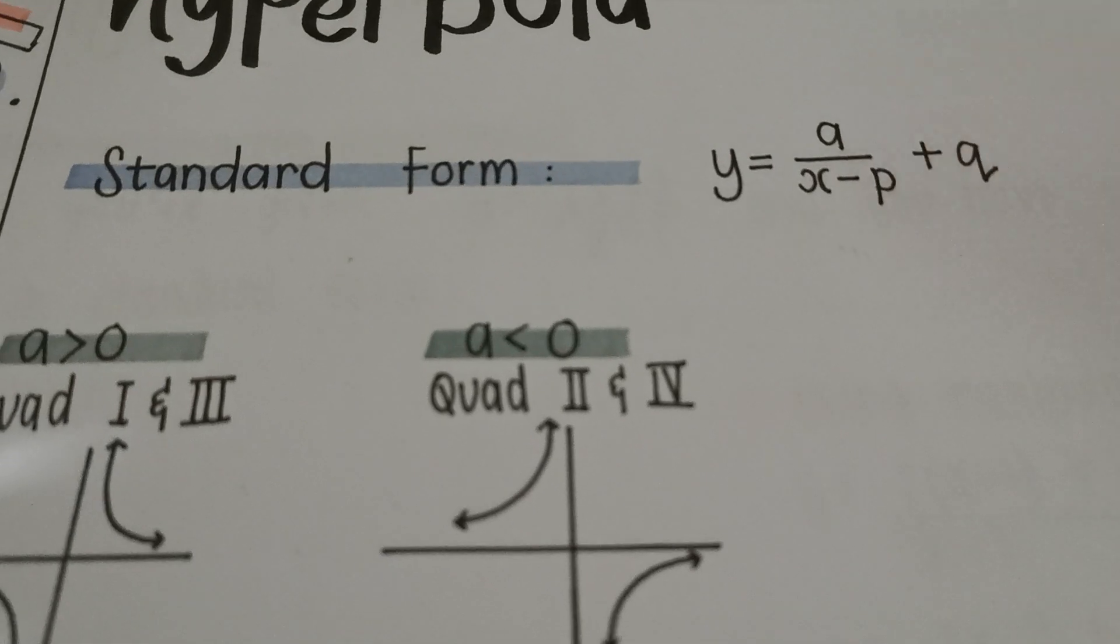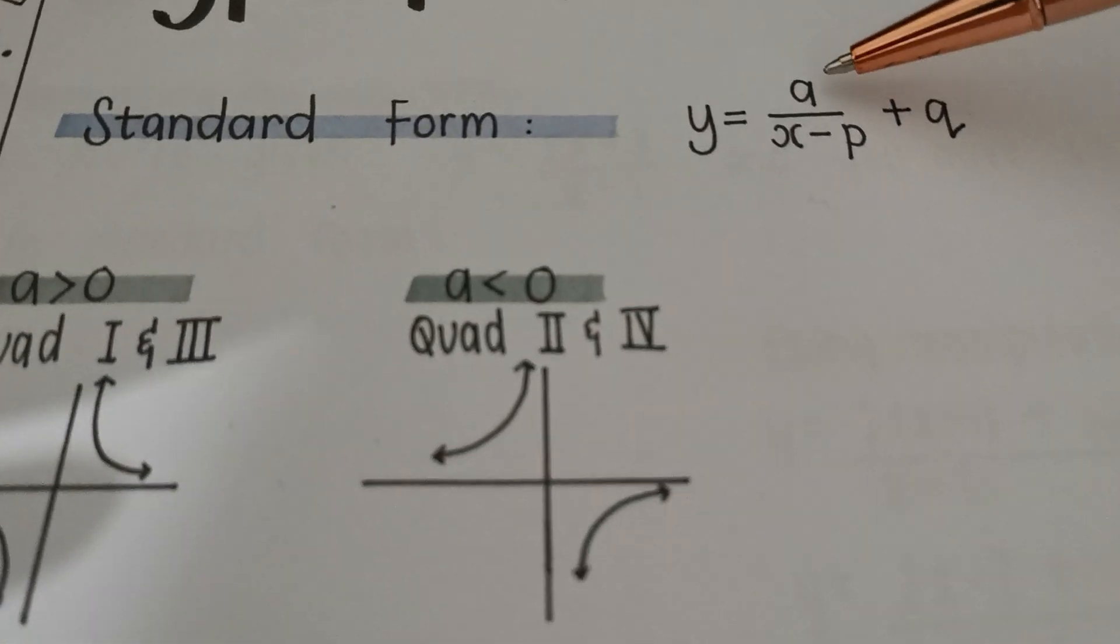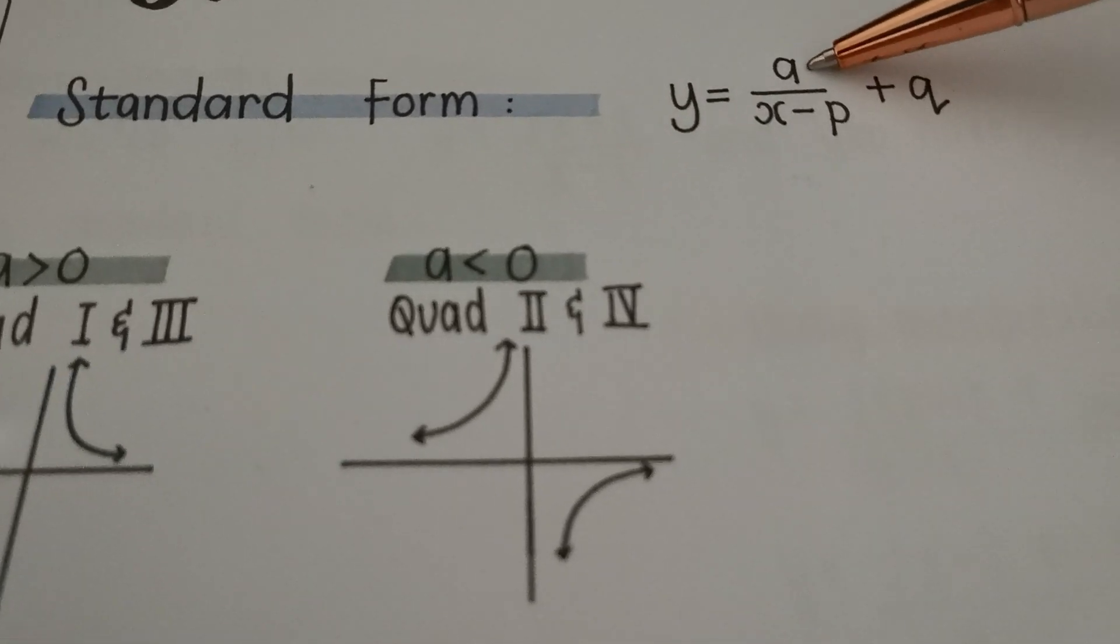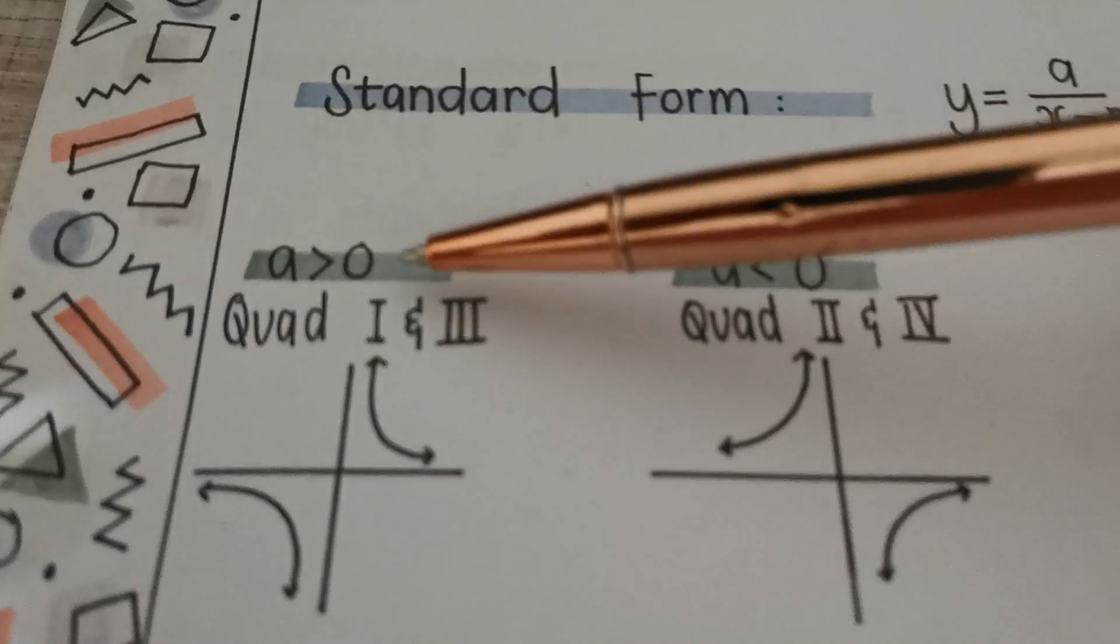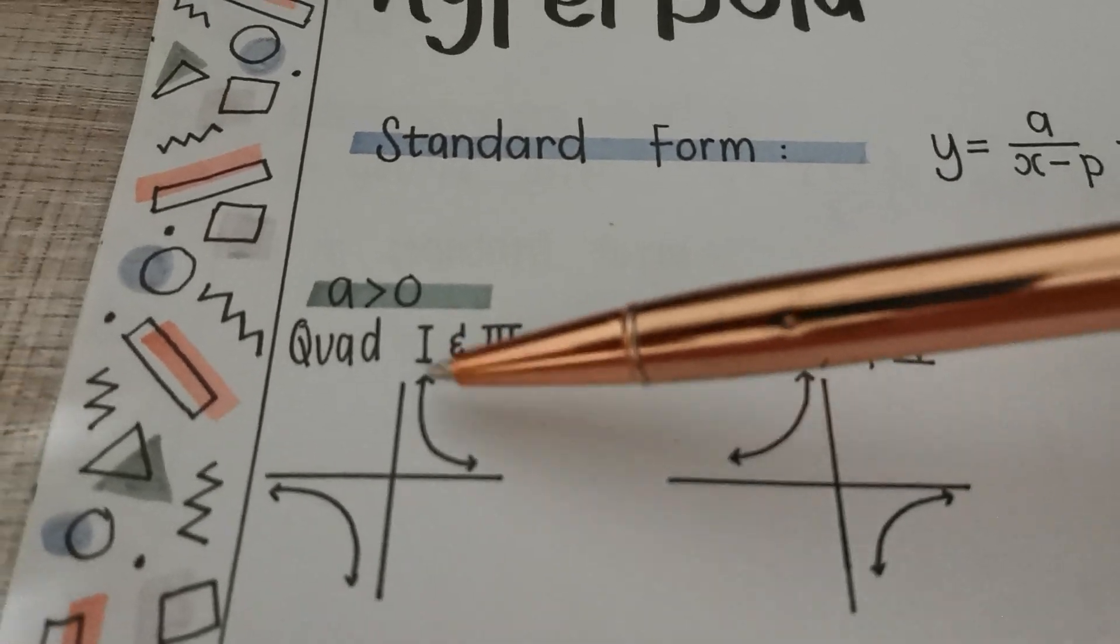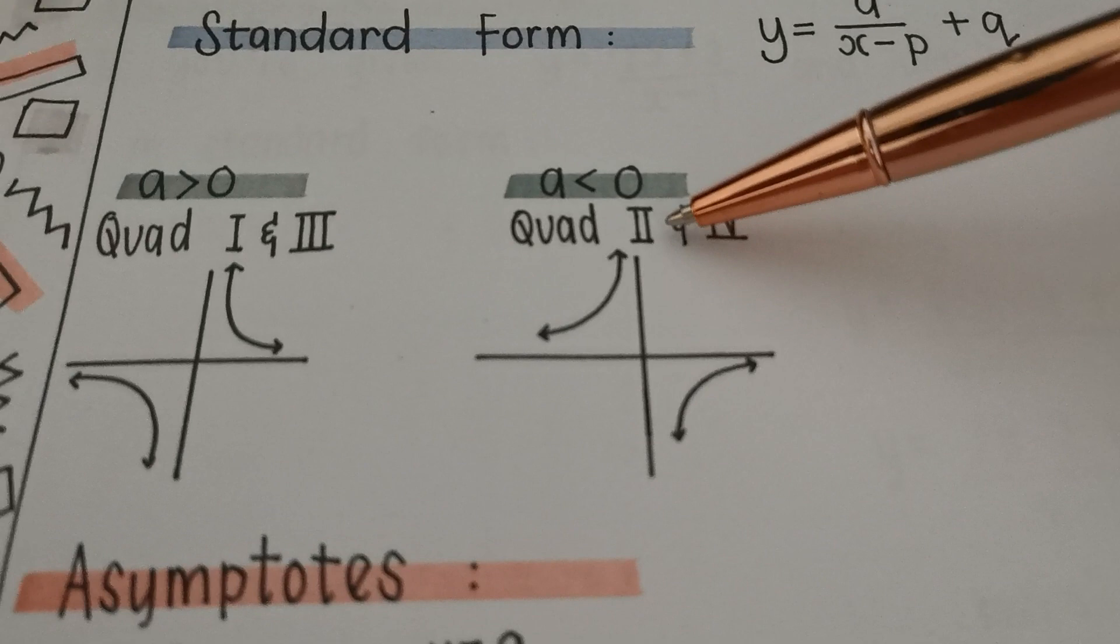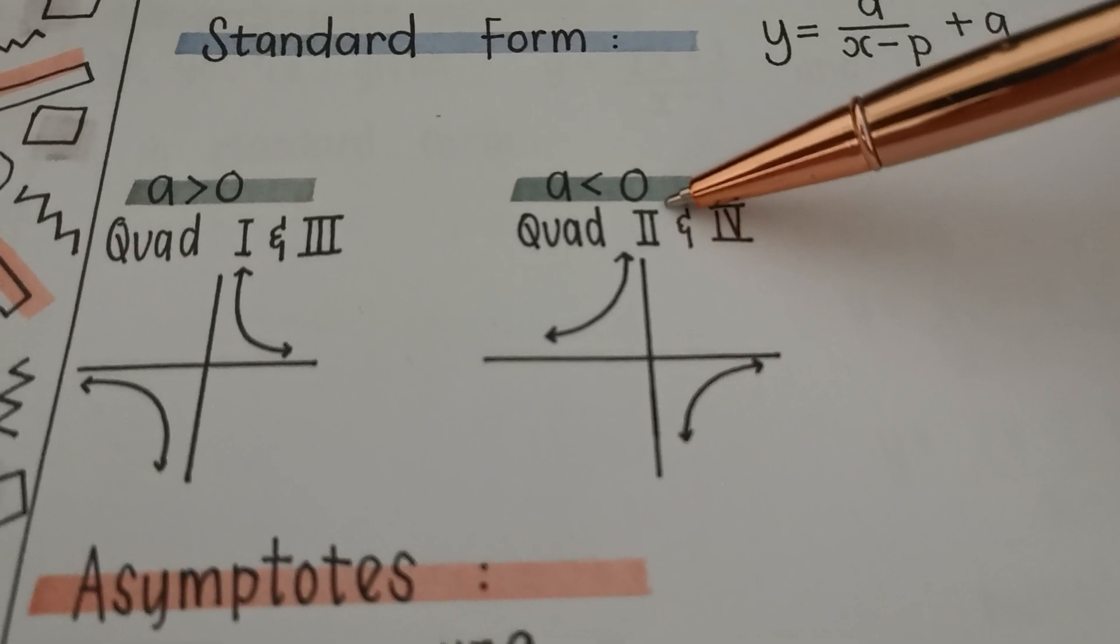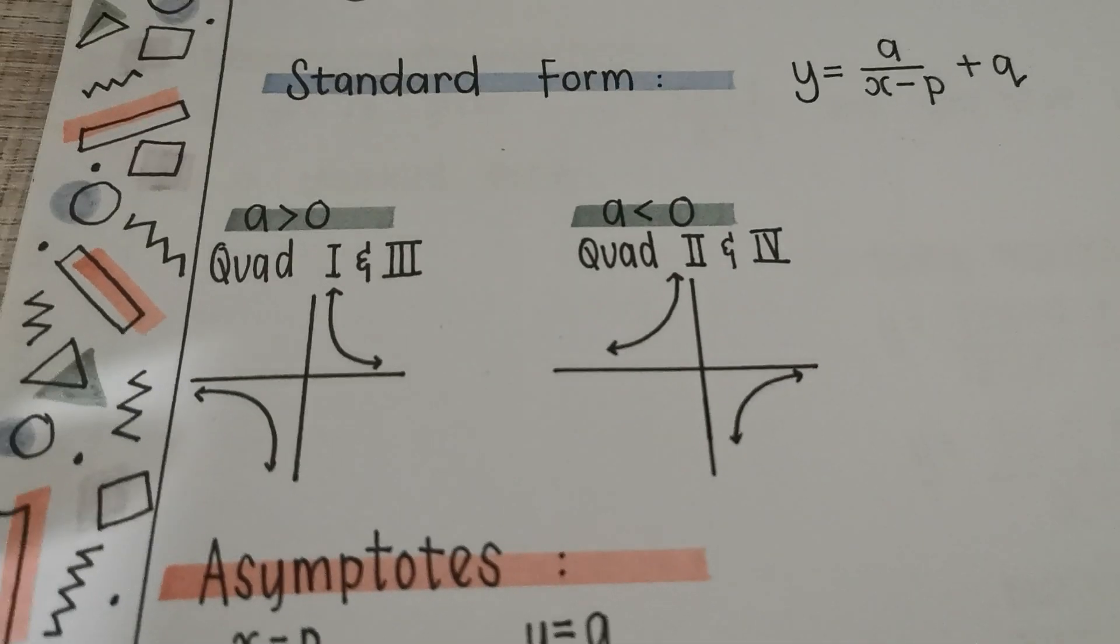This a-value over here, I see I'm on 2 minutes and 22 seconds, I need to speak a bit faster. This a-value tells us in which quadrant we're going to be. If the a-value is greater than 0, then it's going to be in quadrant 1 and in quadrant 3. If the a-value is less than 0, meaning a negative number, then it's going to be in quadrant 2 and in quadrant 3.